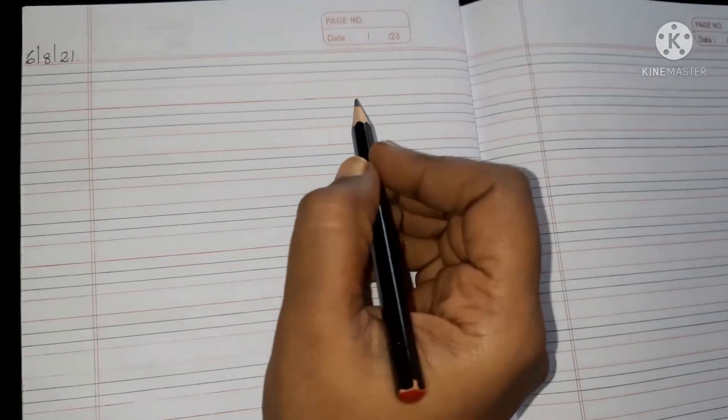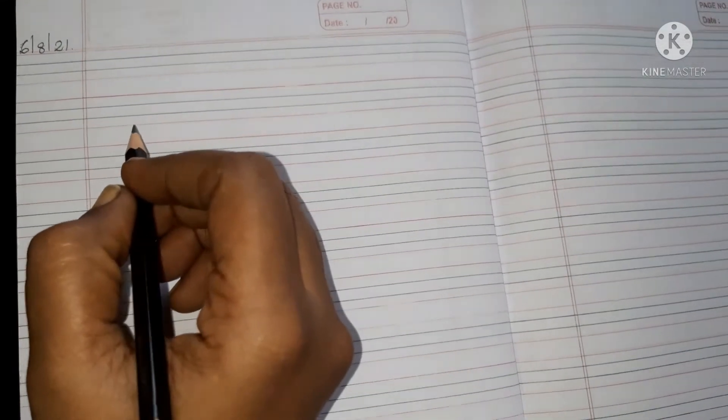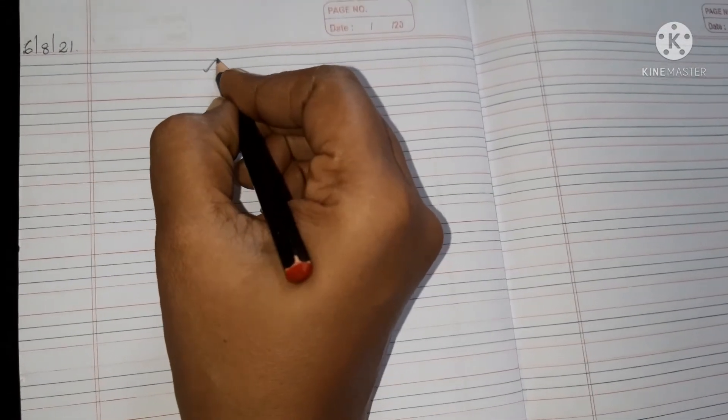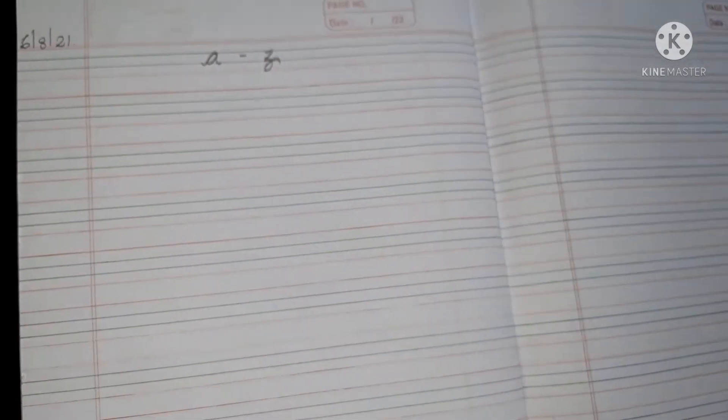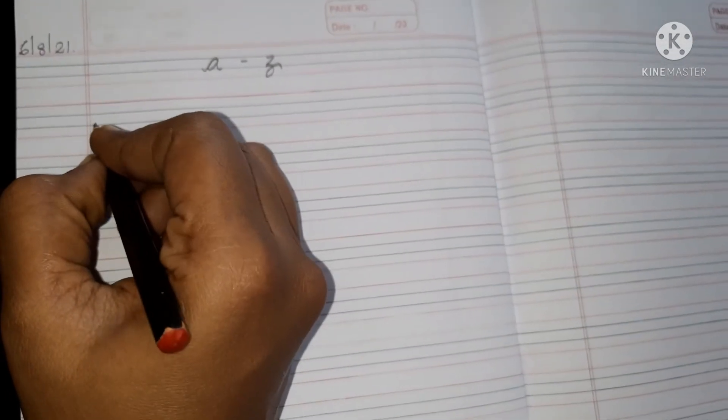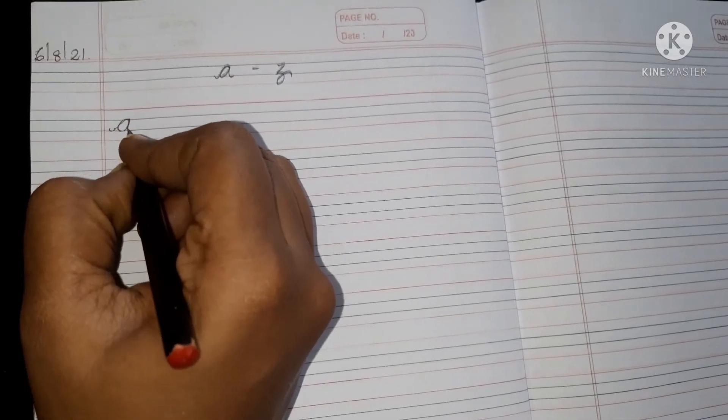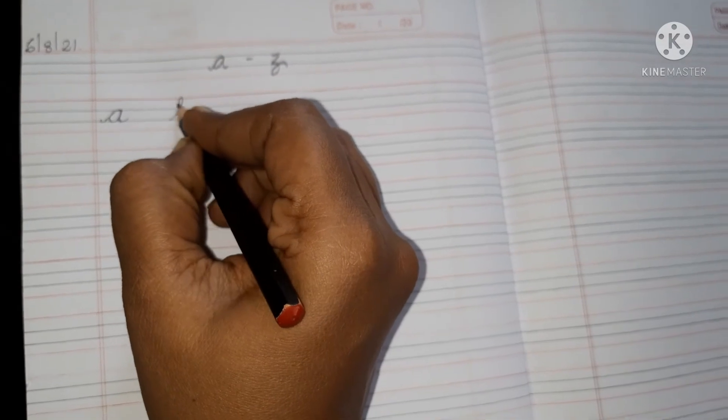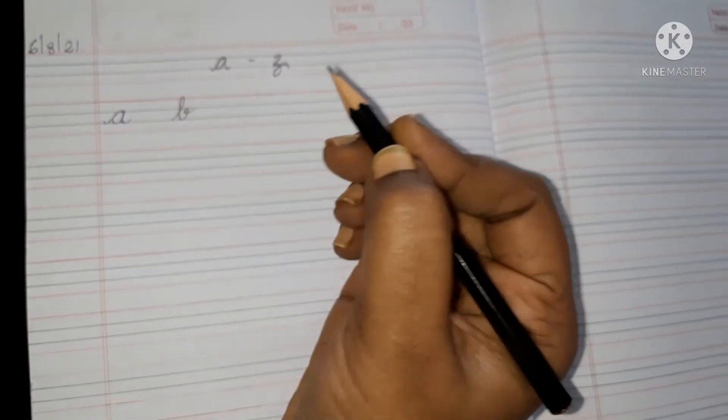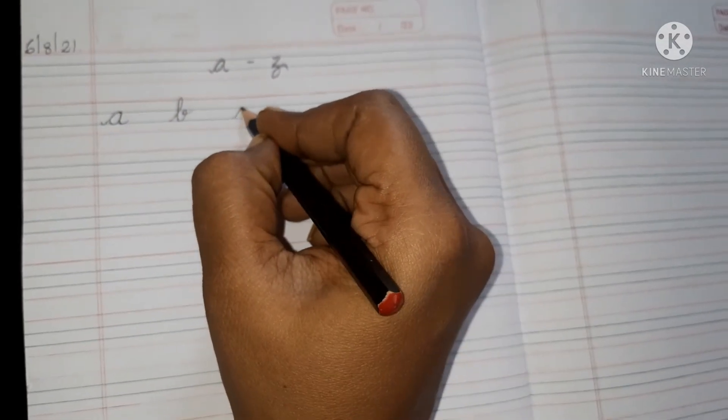So, shall we start writing our small letters children? Yes. Small a to small z. See? Small a. Give a nice stroke and you have to write children. Touch the lines also. See how I am writing?